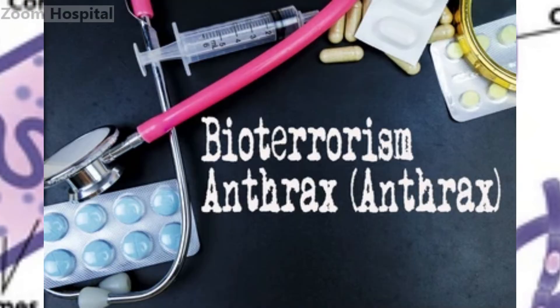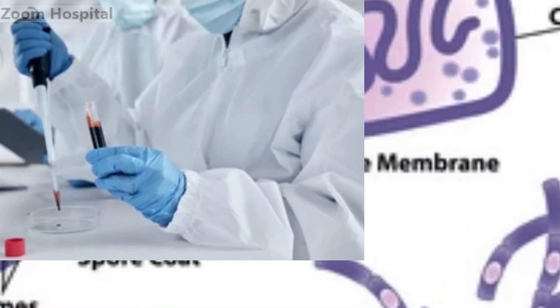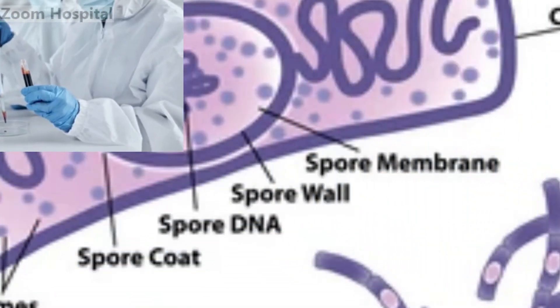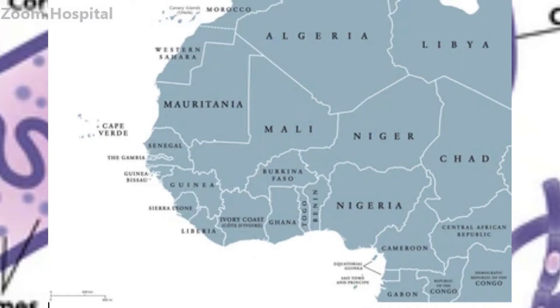Recently, the Federal Ministry of Agriculture and Rural Development alerted the general public on the outbreak of anthrax in some neighboring countries within the West African subregion, specifically northern Ghana bordering Burkina Faso and Togo.